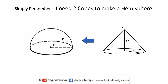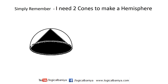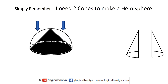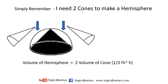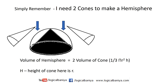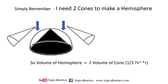I will merge my first cone into the hemisphere, so I am left with two parts of the hemisphere. Now let's take another cone and break it into two parts — one part to fill the left side of the hemisphere and the other part to fill the right side. So I need two cones to make a hemisphere. The volume of the hemisphere will be 2 times the volume of a cone. Since h equals r, the volume becomes 2 times 1/3 π r cube, giving a final volume of 2/3 π r cube.